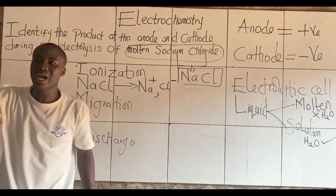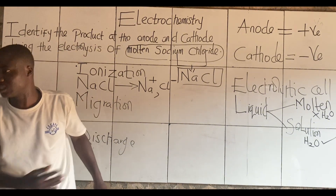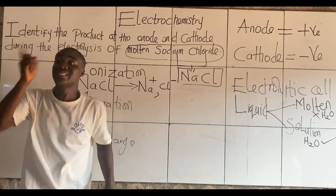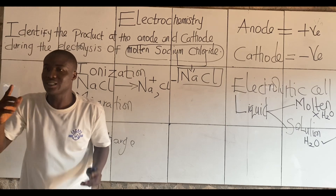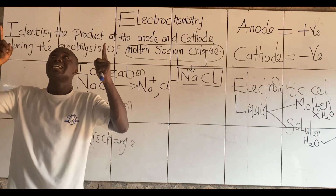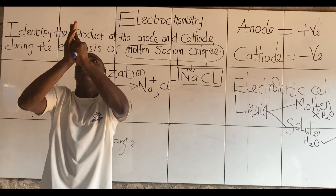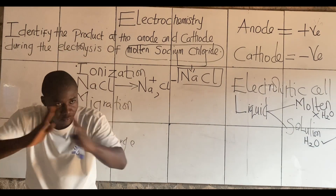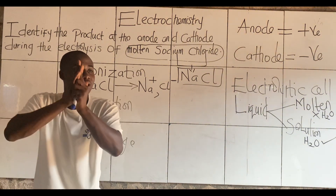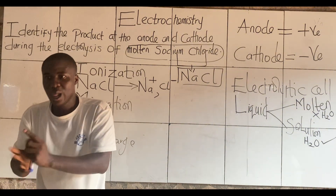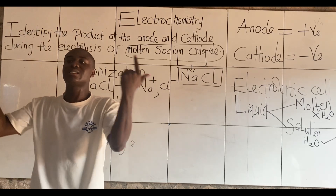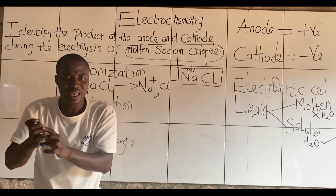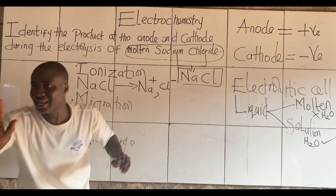There's a scientist called Charles Augustus Coulomb. He said: like charges repel. Like charges — plus plus — do they come together or repel each other? Repel each other. Minus minus — repel. But unlike charges attract. So with that knowledge, we're able to migrate them successfully.